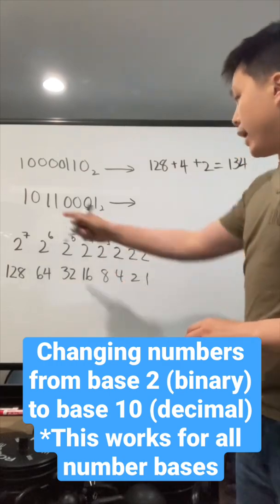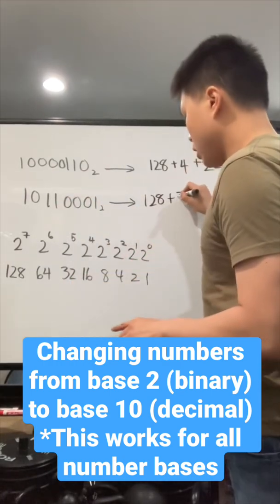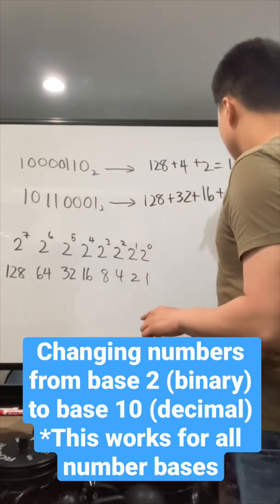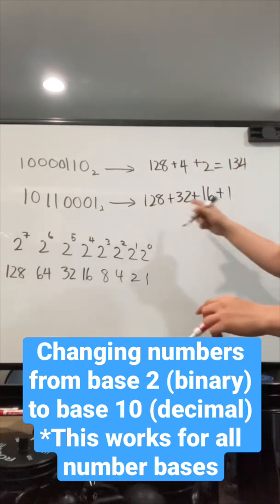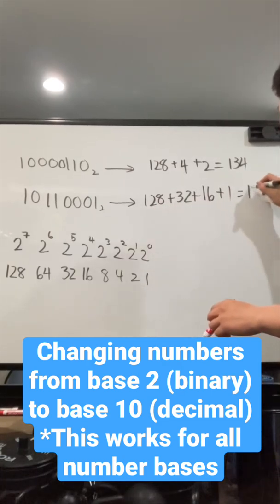That's in base 10. Let's look at the next one. That's 128, and that one's going to be plus 32 plus 16 plus 1. So what is that? That's going to be 160, 176, 177.